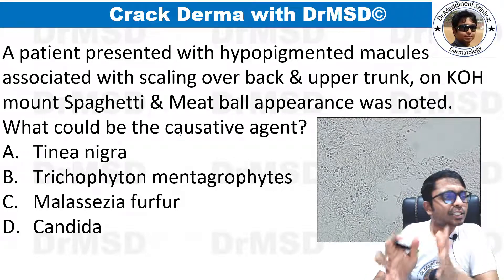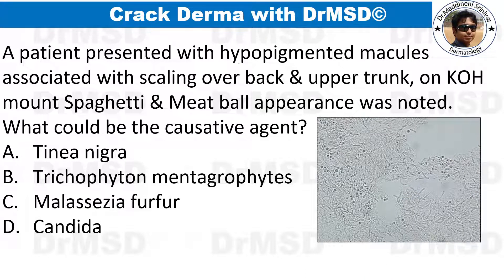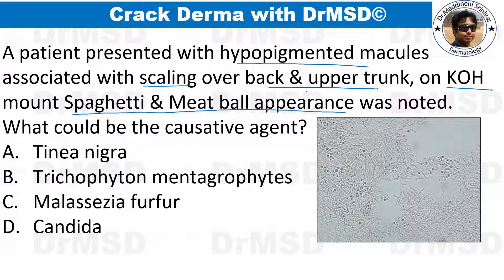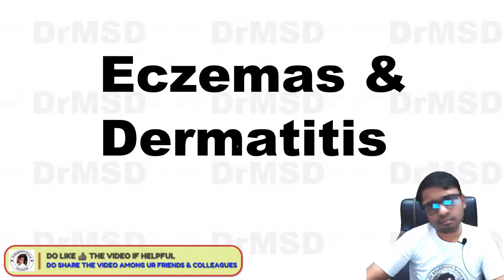A patient presented with hypopigmented macules with scaling over the back and upper trunk, and KOH mount showing short spaghetti and meatball appearance. This is a straightforward question — the diagnosis is pityriasis versicolor, and the causative agent is Malassezia globosa or Malassezia furfur. Option C is the answer.